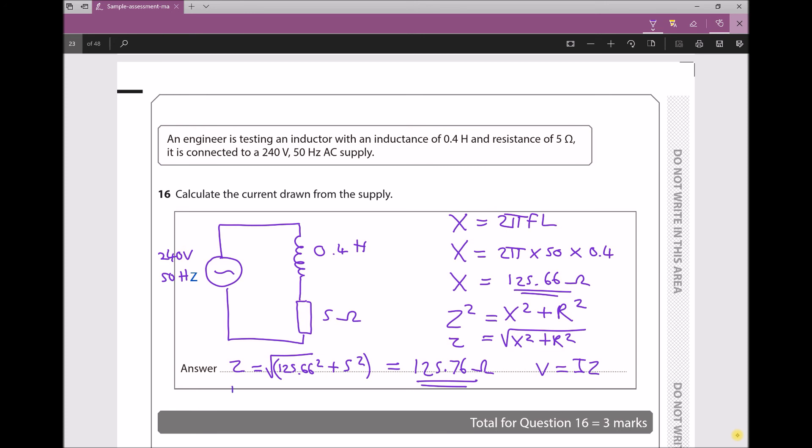Therefore, dividing each side by Z, I is just V over Z. We're given these values: a voltage of 240 and we've calculated Z as 125.76. Therefore our current equals 1.91 amps.